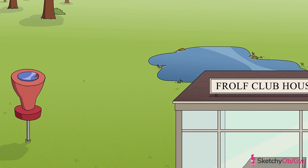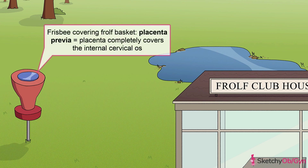First up is placenta previa and its related disorders. Placenta previa is when the placenta completely covers the internal cervical os — just like this frisbee is completely covering the frolf basket. This is a huge bummer because the placenta is blocking the fetus's exit, and it really increases the risk for major maternal hemorrhage, so this condition has to be treated with care.